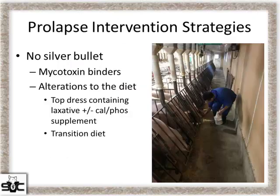When we've decided on an intervention, it's been based off that previous figure. What we've had the best success with is manipulating the feed pre-farrow. We've added a mycotoxin binder to fight mycotoxins if that's part of the problem. We've put on a top dress containing a laxative, and that has helped on farms. Sometimes the laxative isn't enough, so we end up adding a Cal-Phos supplement to see if there's any mineral imbalance. Some farms have even gone to a full transition diet when bin space in gestation allowed.